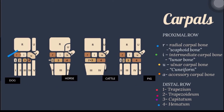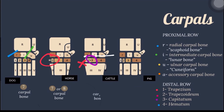In the dog, the radial carpal bone and the intermediate carpal bone are fused; the rest are present, for a total of 7 carpal bones. In the horse, the first carpal bone is either present or absent, for a total of 7 or 8 carpal bones. In ruminants, all proximal row bones are present, the first carpal bone is missing, the second and third are fused, and the fourth is present, for a total of 6 carpal bones. In pig, the proximal and distal rows are complete, for a total of 8 carpal bones.